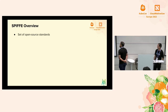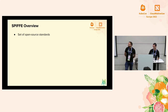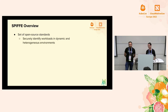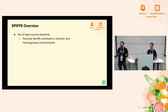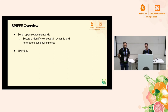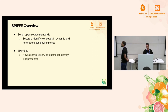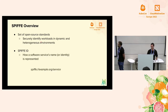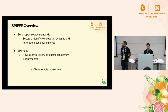SPIFFE is a set of open source standards that all share the same common goal: to be able to securely identify workloads no matter where they are running. In order to do that, we need to represent and provide IDs. For that, we have the SPIFFE ID — a representation of an identity. A SPIFFE ID is a URI that has the SPIFFE scheme.